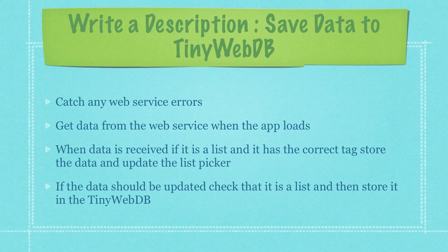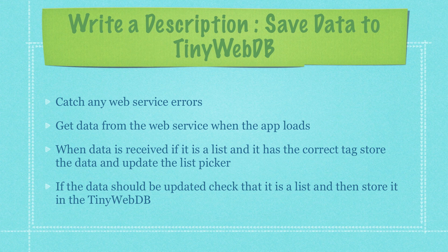Let's look at another use case that explains exactly how we're going to do that. Basically, we need to first catch any web service errors that occur. Then we need to get data from the web service whenever the app loads so that all that information can be stored in our list picker and master list. We also need to verify that the proper tags are designated, and any time new names are added, check that the data is a list and store it in our TinyWebDB.